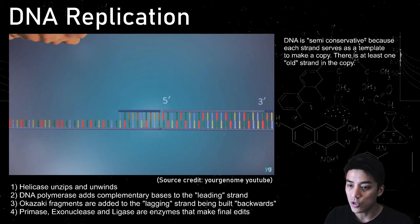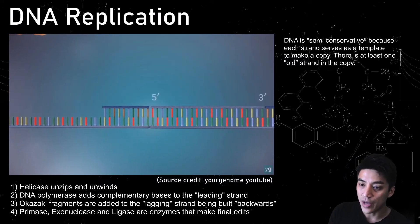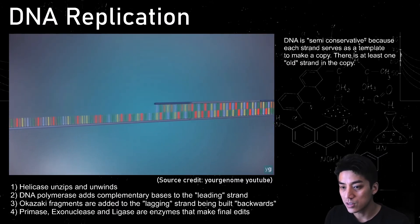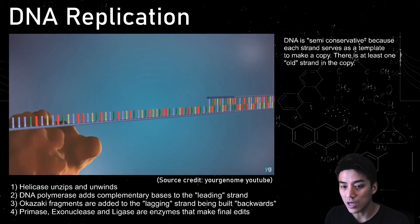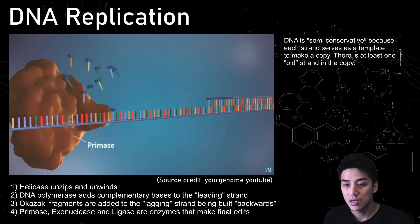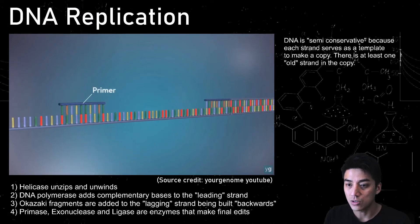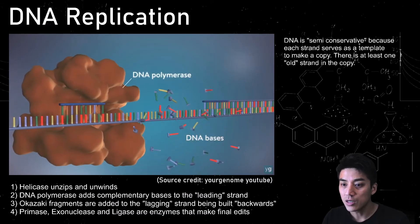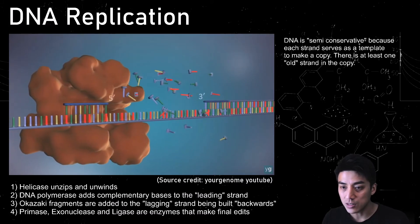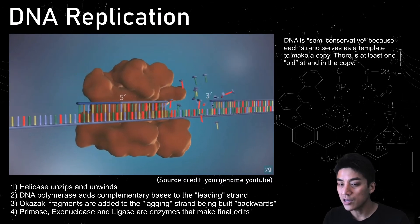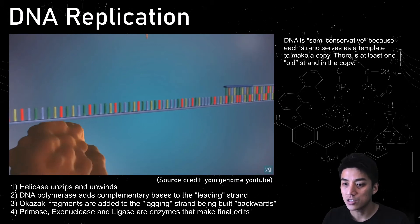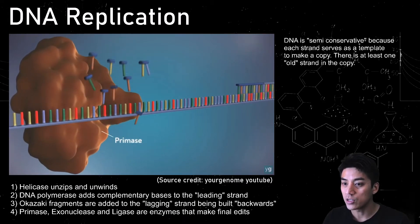However, the lagging strand, remember, is upside down. It's also backwards, so it can't do that. So it's built in fragments. It's called Okazaki fragments. And again, you have primase, which lays down the initial bricks, or the nucleotides. And then DNA polymerase will then come in, and it starts pairing up the bases. So again, if there's an A, a T will come in. If there's a C, a G will then come in, so it makes sure there is a match.